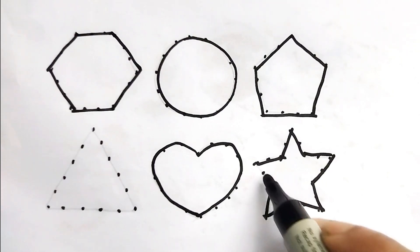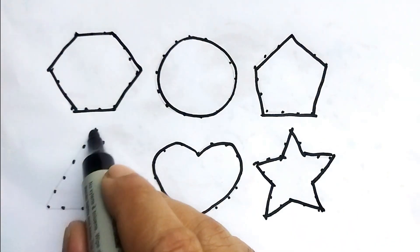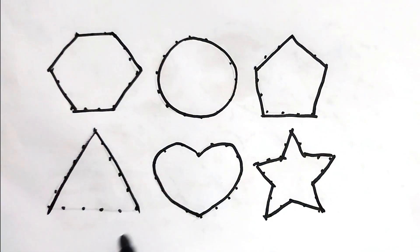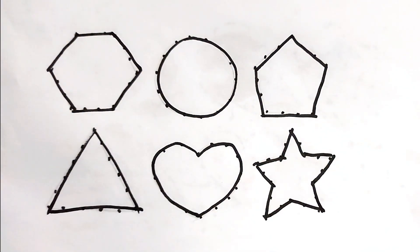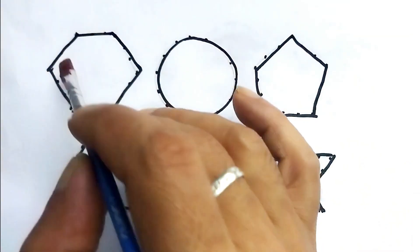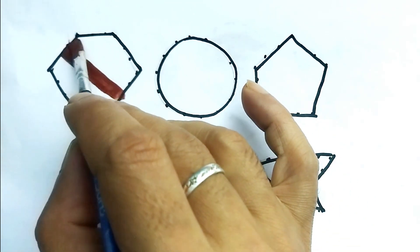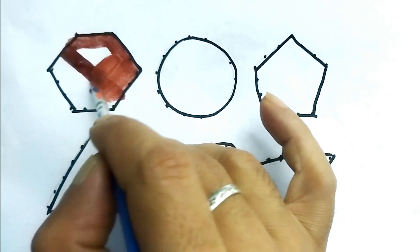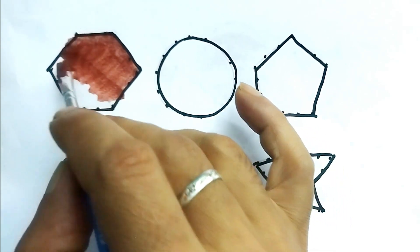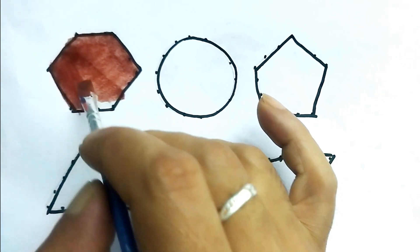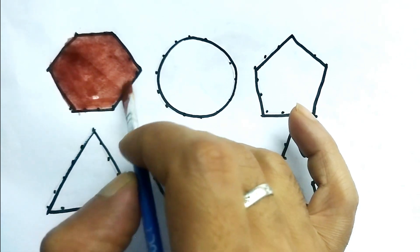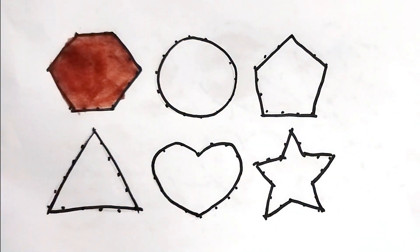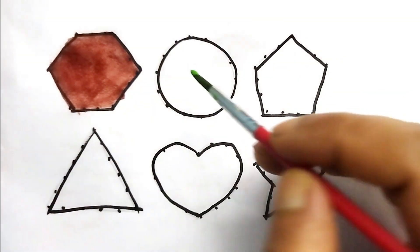This is a star. This is a triangle. This is the chocolate color — yes, the chocolate color hexagon. Chocolate color hexagon. Green color, green color.